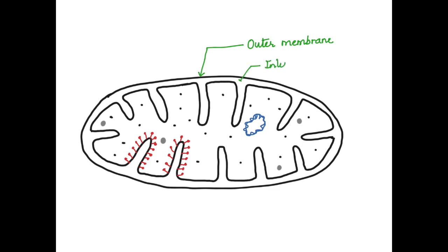Between the outer and inner membrane, we can see a space called the inter membrane space. Next, we label the inner membrane. Here we need to note that we label the inner membrane and the folds separately.